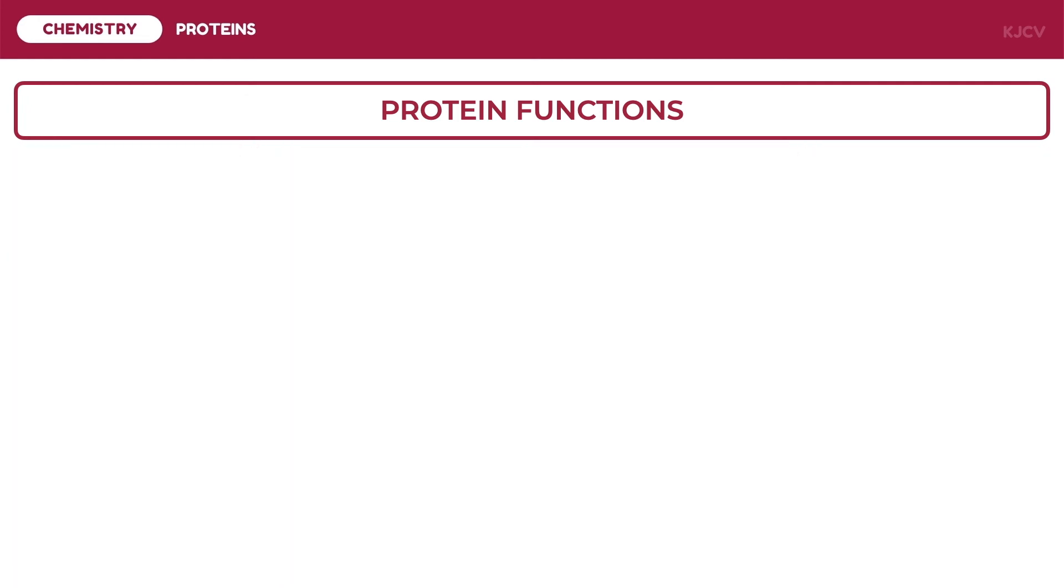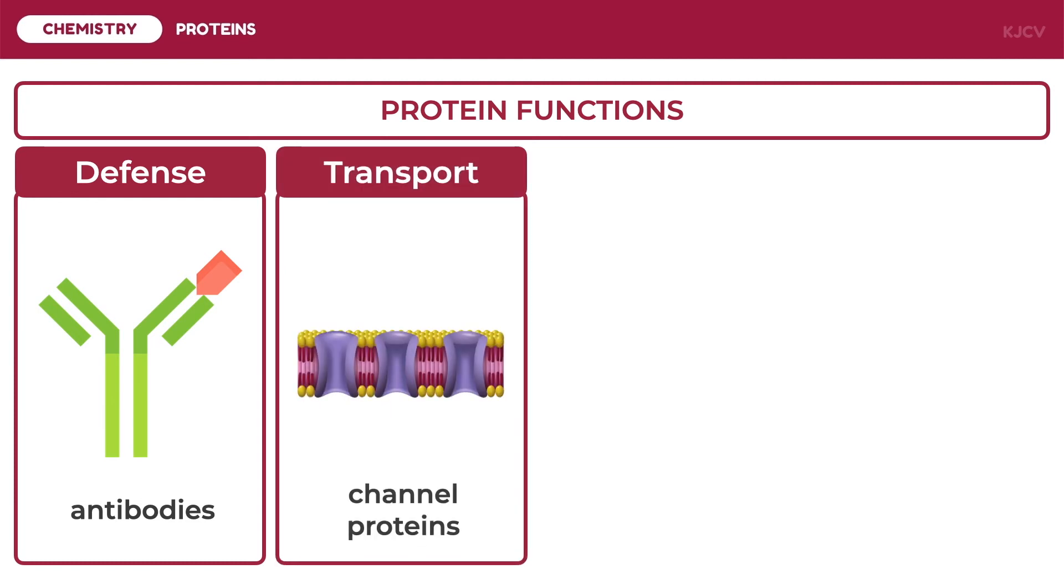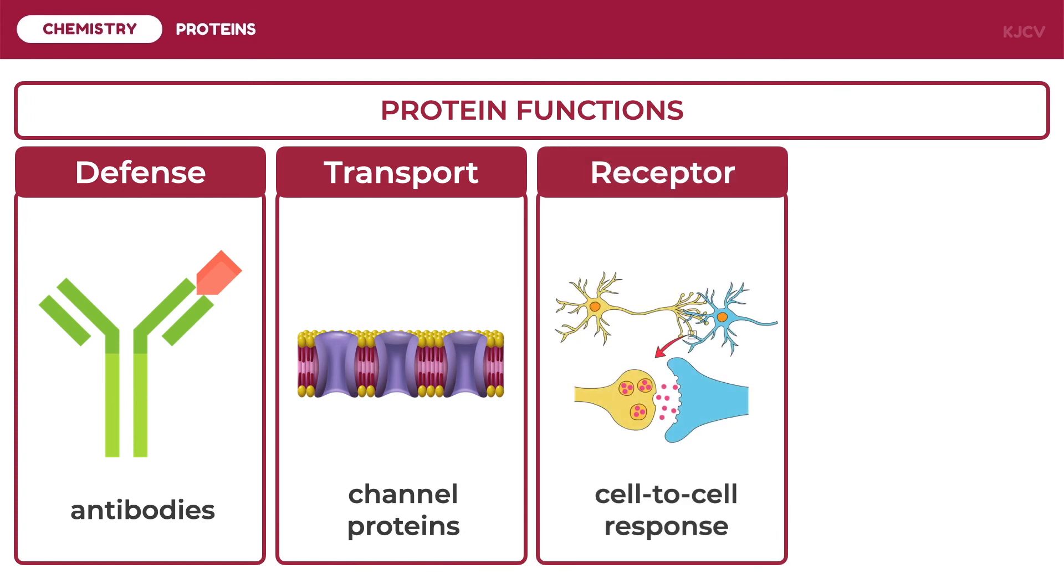Proteins also function as protection against disease like antibodies. They also serve as means for movement of substances in and out of a semi-permeable membrane like that of the phospholipid bilayer. These are also functional as responses of cell to chemical stimuli like those in neuron junctions.